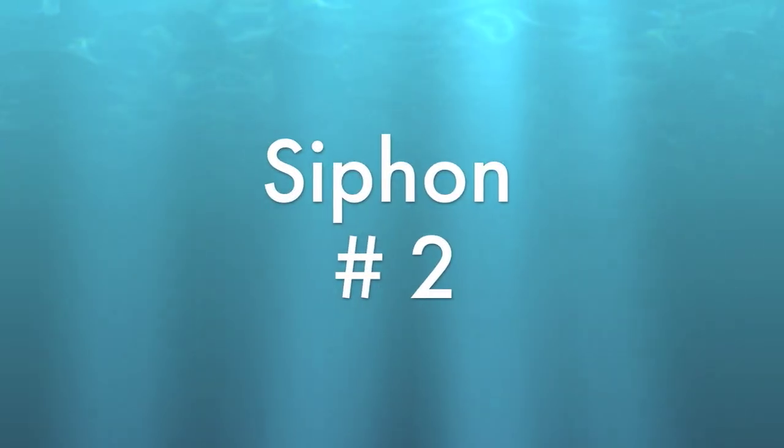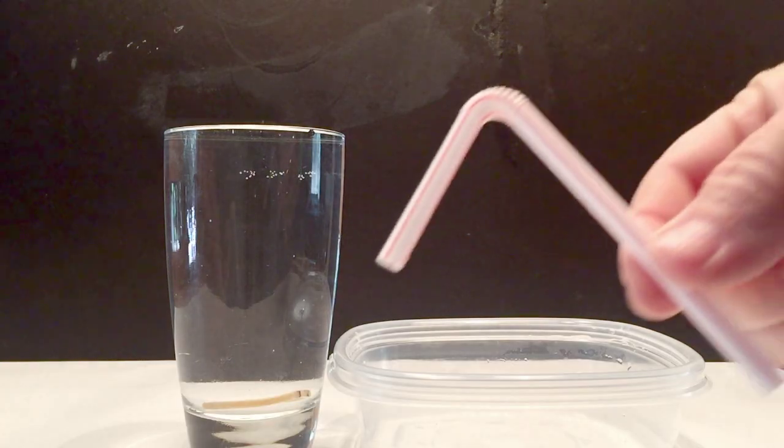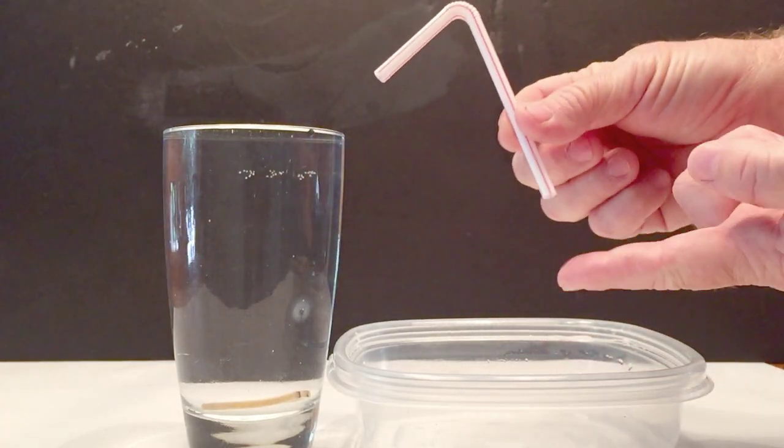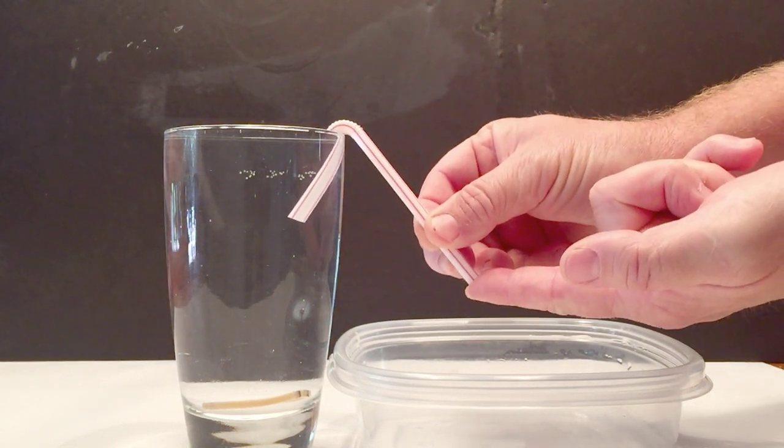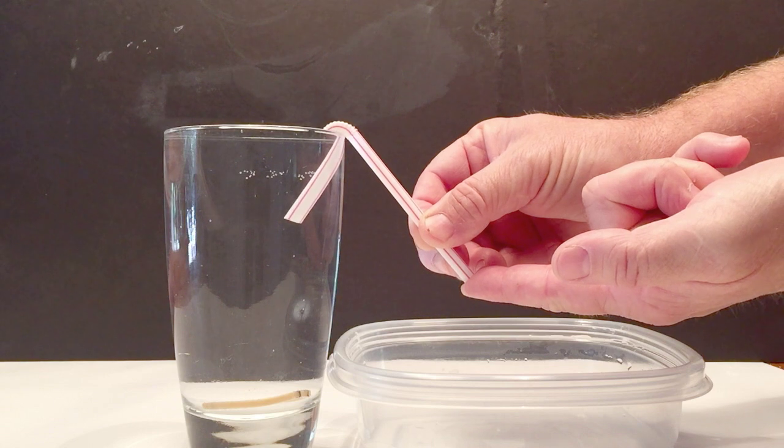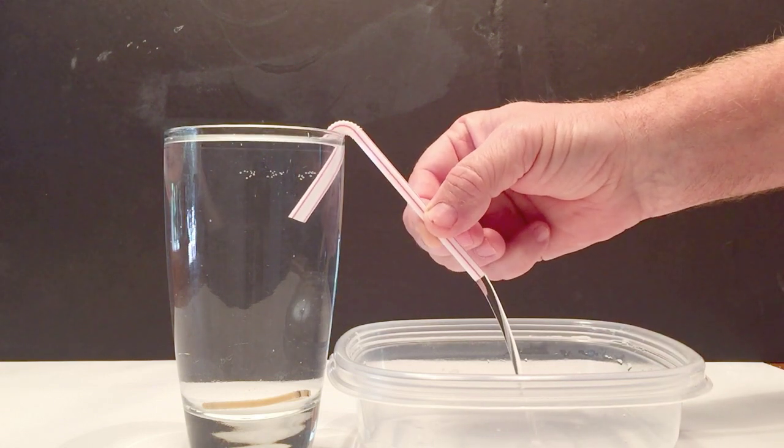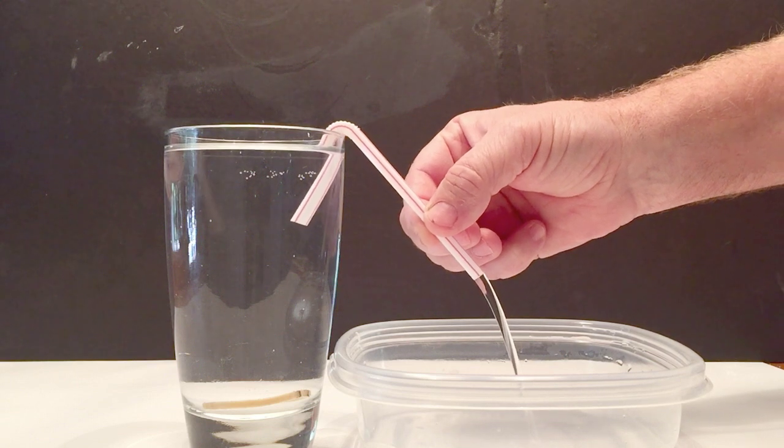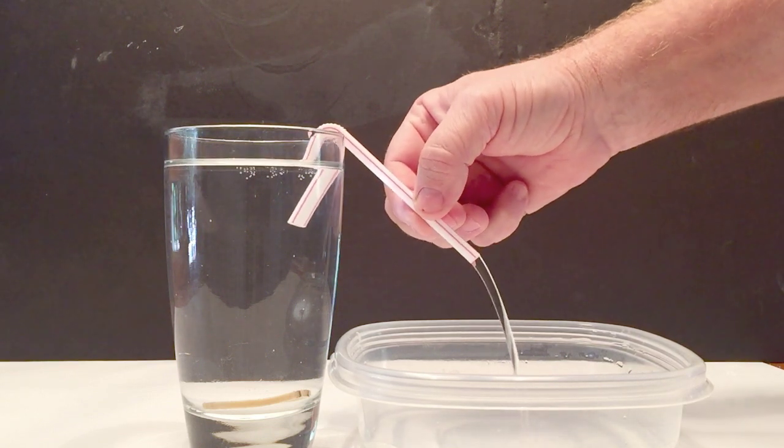Number two siphon is a self-starting siphon with the help of your finger. By having the water all the way to the edge of the glass on the very top, take your finger and place it on the end of the straw, then place the straw all the way down as far as possible, and release your finger, and the siphon will start. As you release your finger, the water will rise up, go over the edge, and continue to go until the water level is the same level at the end of the straw.